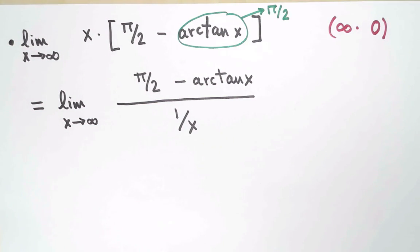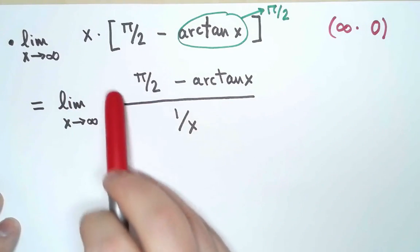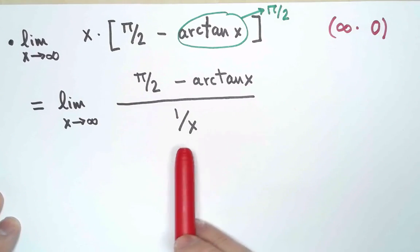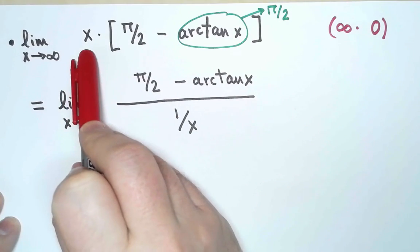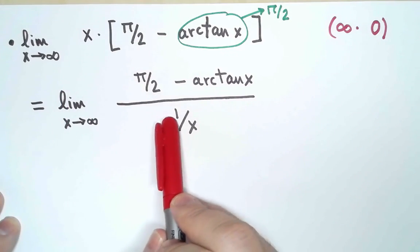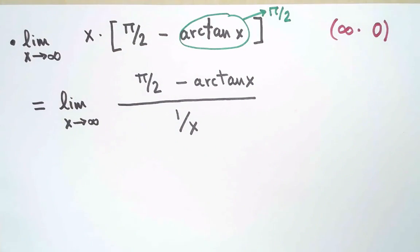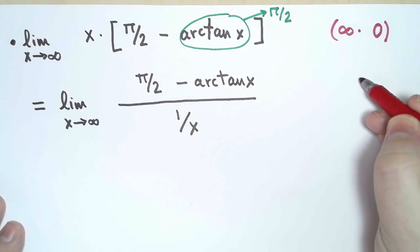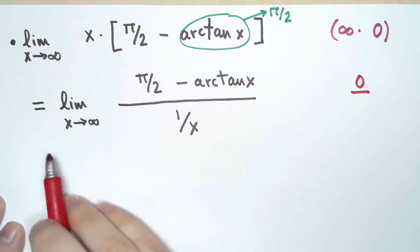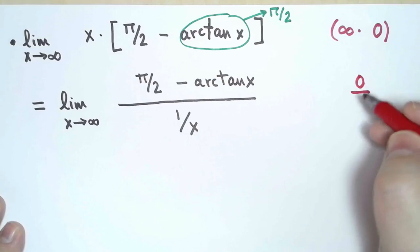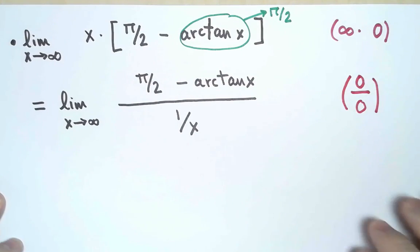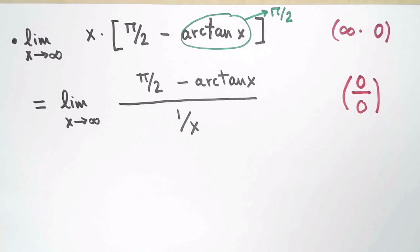What I have done here is I've written x as 1 over 1 over x, because multiplying by a number is the same thing as dividing by 1 over that number. And once I have it this way, now I have a quotient. Let's see which indeterminate type it is. The limit of the numerator is 0, we already knew that. And as x approaches infinity, the limit of 1 over x is also 0. Great! So this is an indeterminate type 0 divided by 0, and that is exactly the type where I can try to use L'Hôpital's rule.